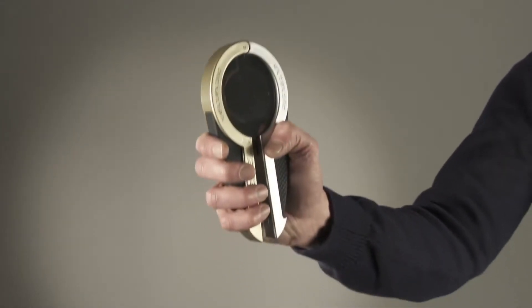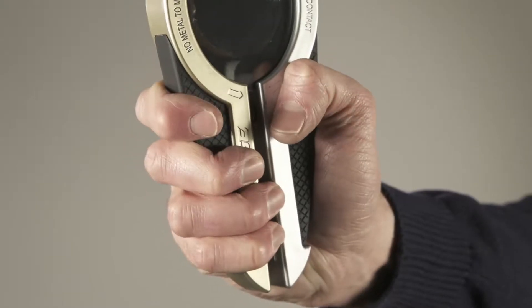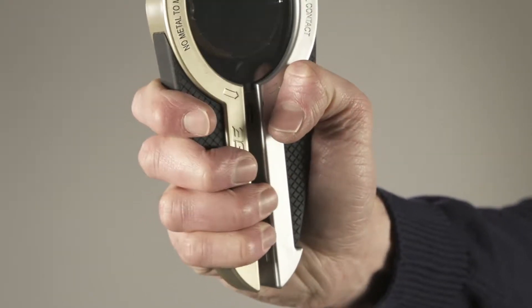The central lens of the Castrol Edge Stress Press represents the metal surfaces of an engine. When you squeeze the handles, you're applying pressure to the lens.